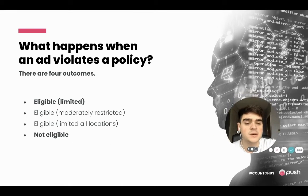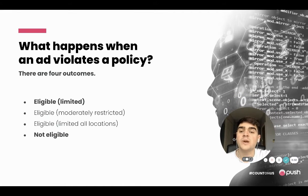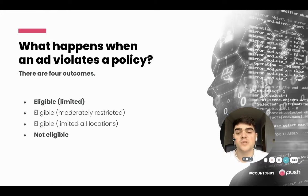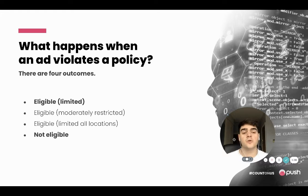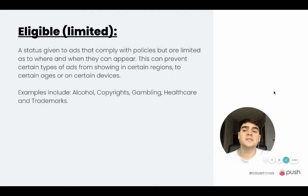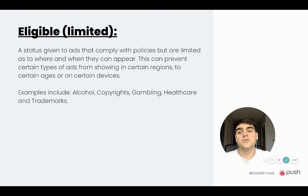So what happens when an ad violates a policy? There are four outcomes. I'm going to be touching on the two main ones today: eligible limited and not eligible. There's also eligible but moderately restricted, and eligible but limited in all locations. You'll generally find that you'll hit the first one or the last one if you violate a Google Ads policy. Eligible limited is a status given to ads that comply with policies but are limited as to where and when they can appear — this can prevent certain types of ads from showing in certain regions, to certain ages, or on certain devices.